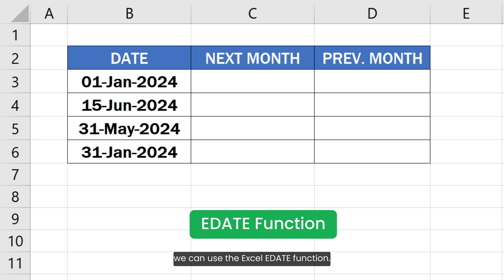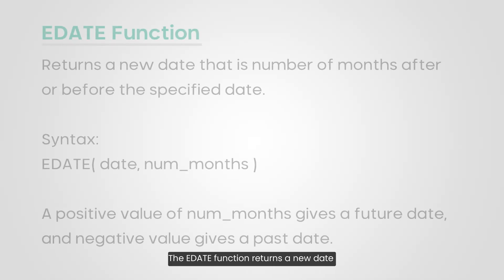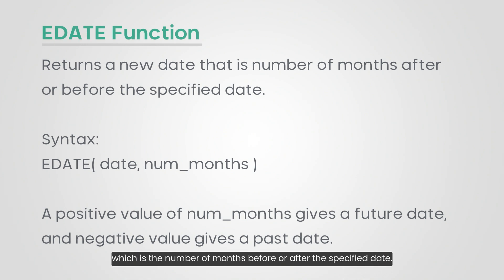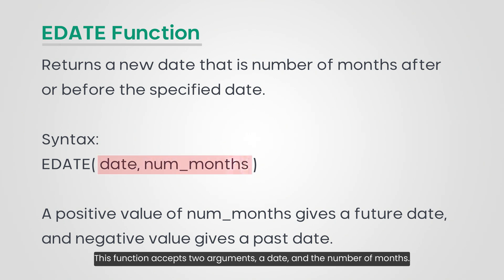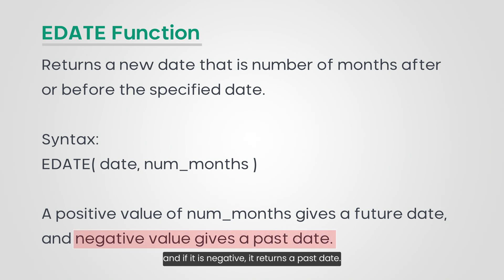To get the same date of the next or previous month, we can use the Excel EDATE function. The EDATE function returns a new date which is the number of months before or after the specified date. This function accepts two arguments: a date and the number of months. If the number of months argument is positive, it returns a future date, and if it is negative, it returns a past date.